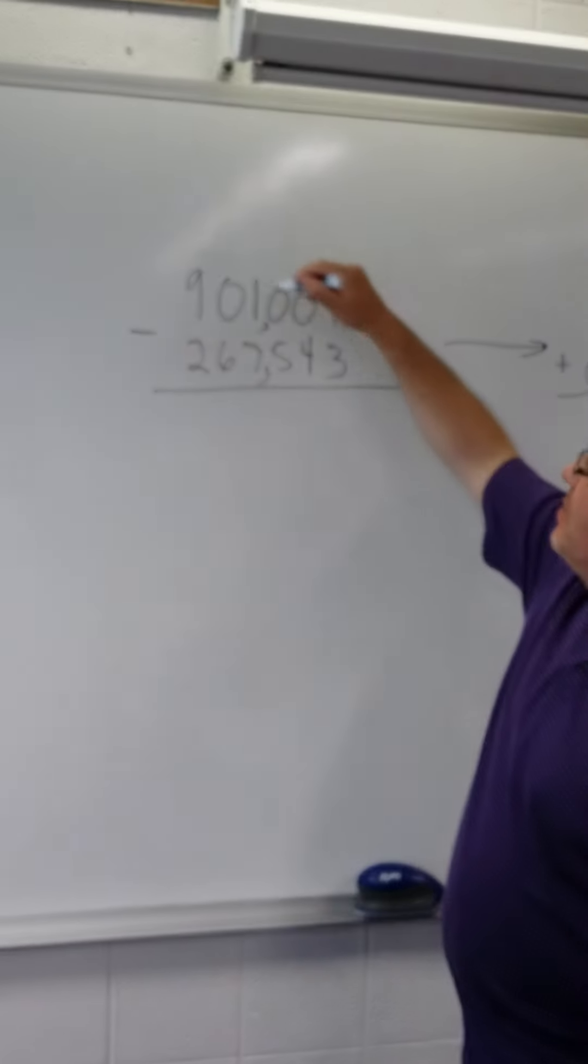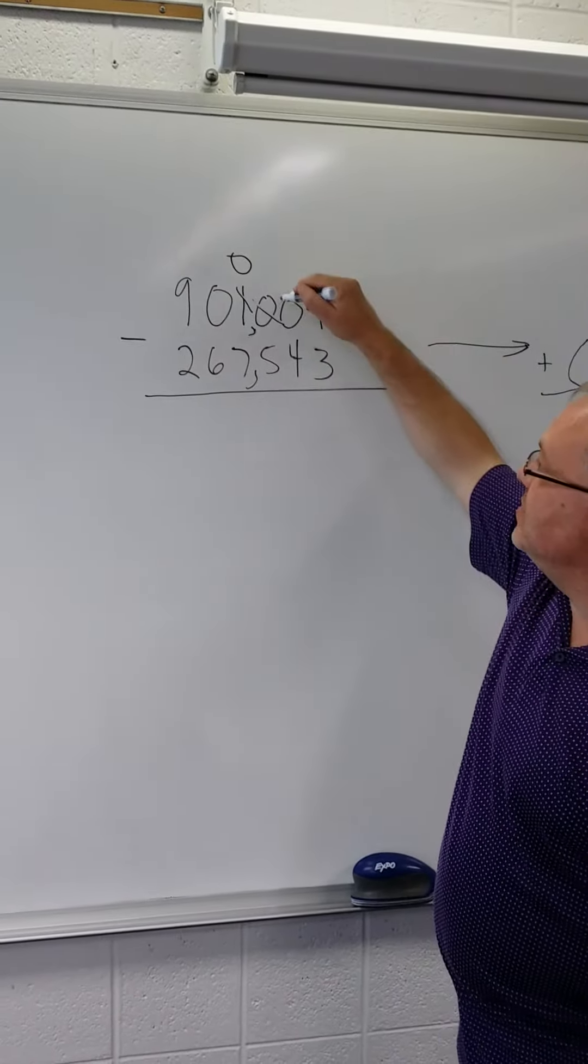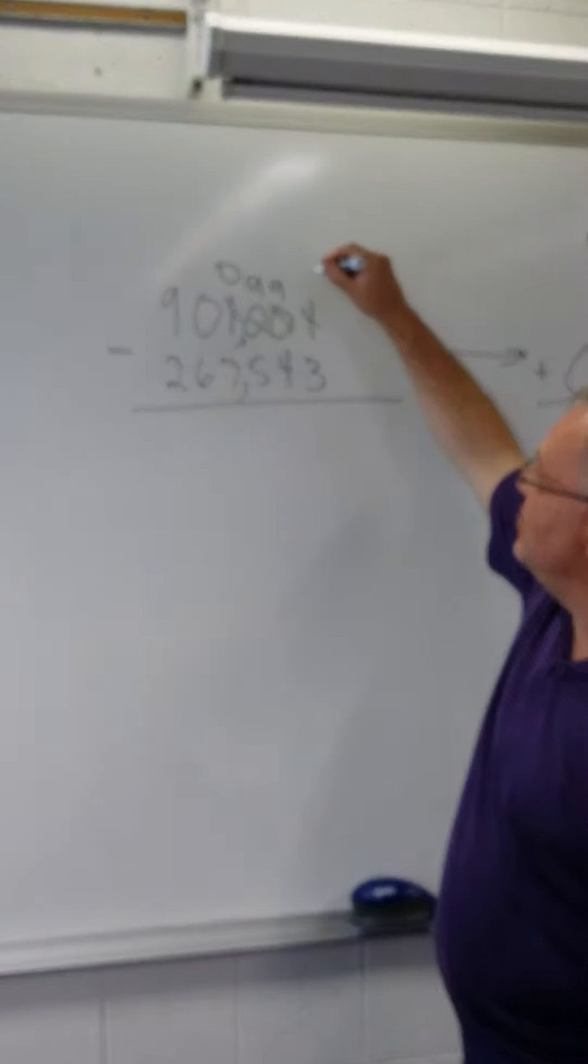As you can see, you've got to borrow from the next non-zero digit, which is in the thousands place. Middle 0s become 9s. And here's the 10 that we borrowed.